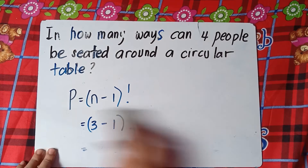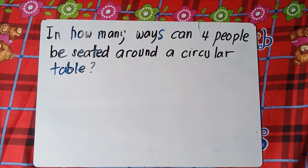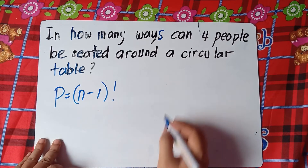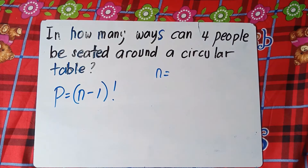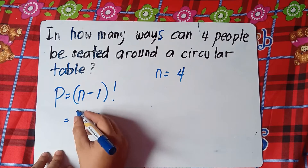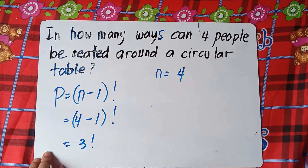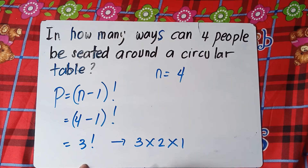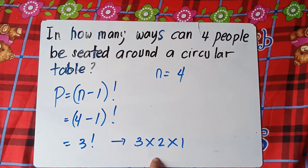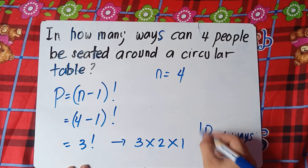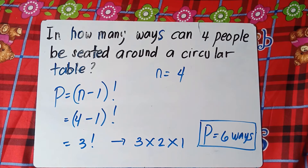In how many ways can four people be seated on a circular table? P equals N minus one factorial. Our N is four, so this is four minus one factorial — that's three factorial, equivalent to three times two times one. Three times two is six, times one is six. So our answer is six ways.